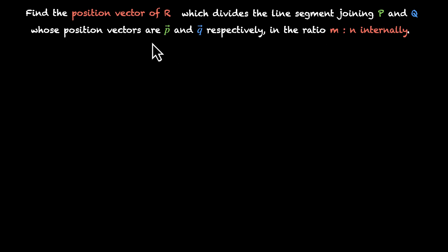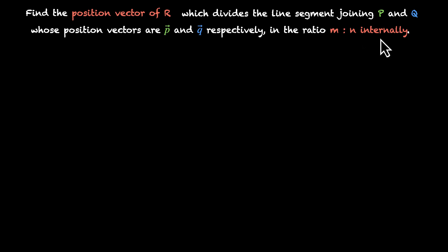So if we are given the position vectors of p and q, and we are given the ratio in which r divides pq — that's m is to n internally — can we find the position vector of r in terms of p, q, m and n?